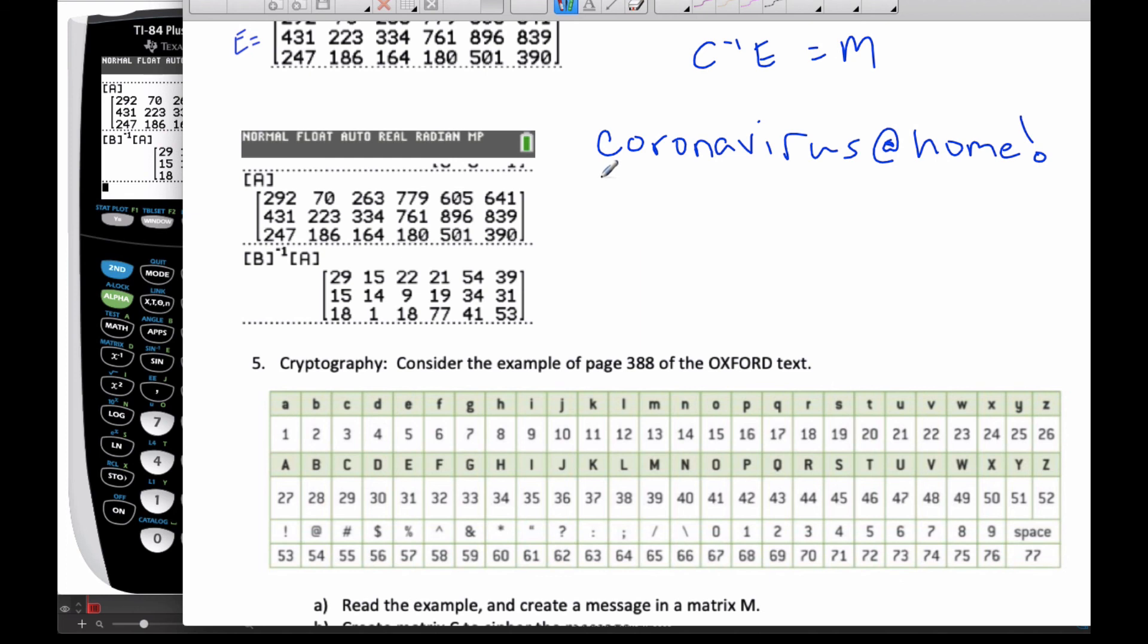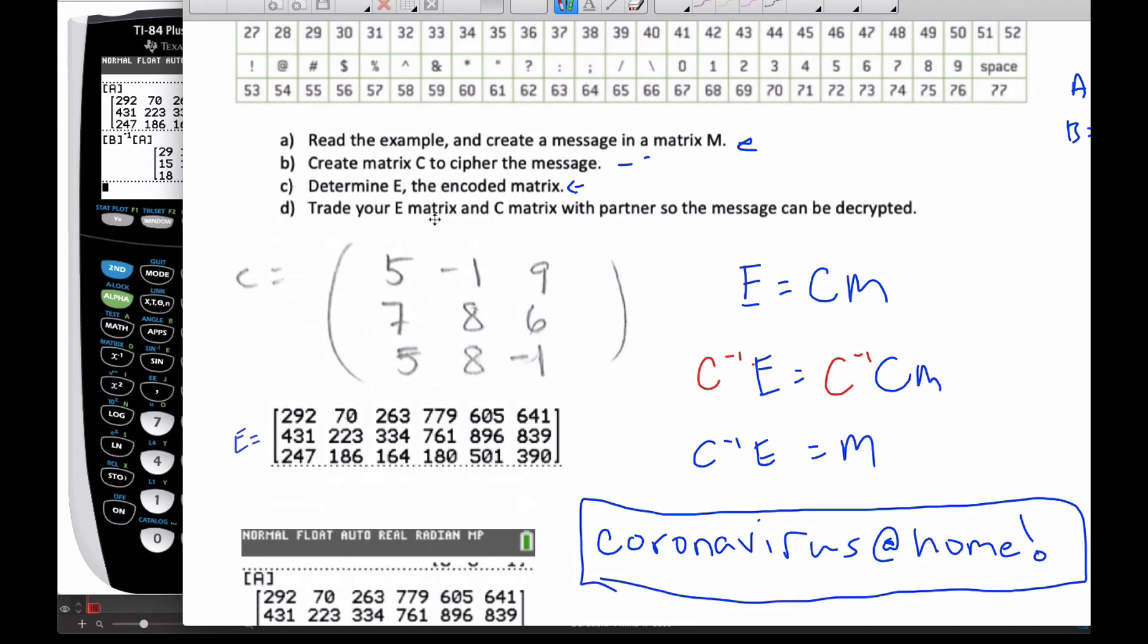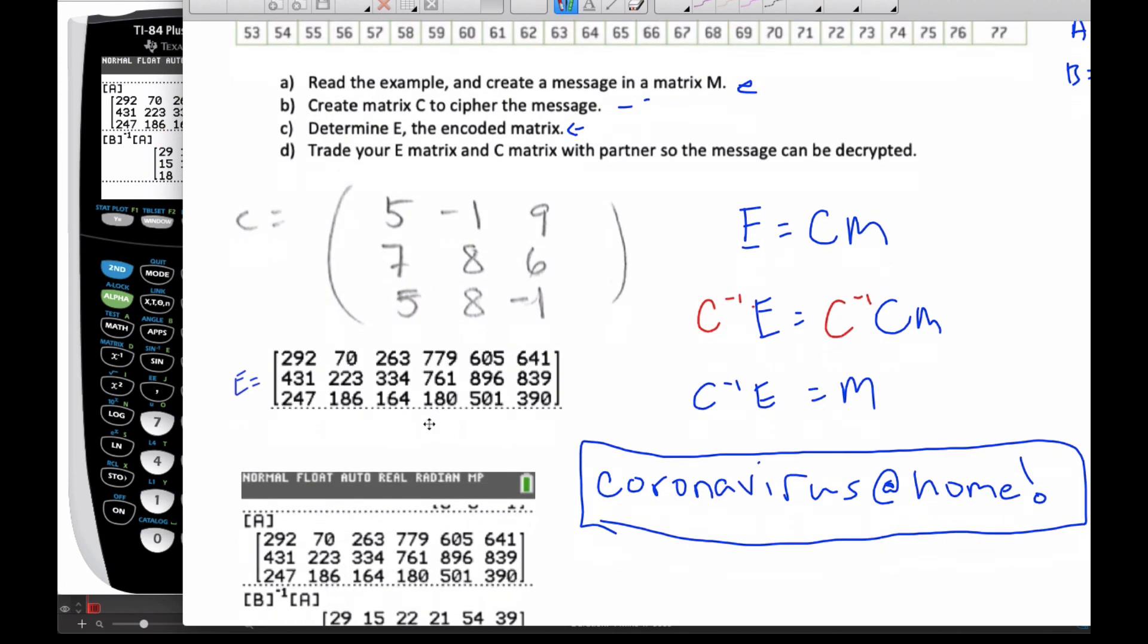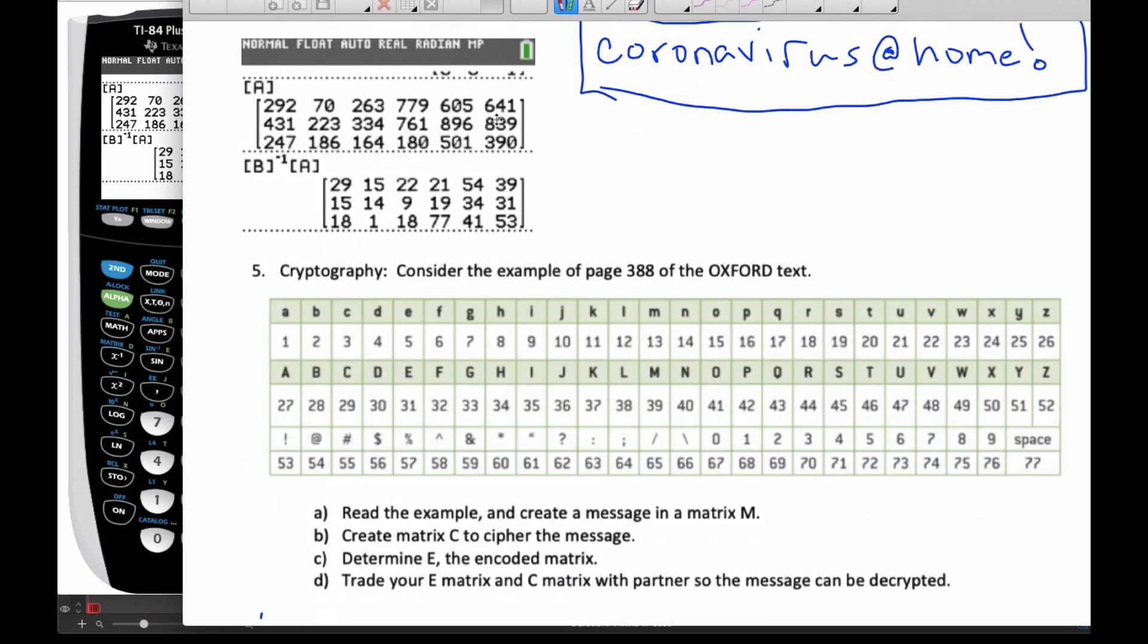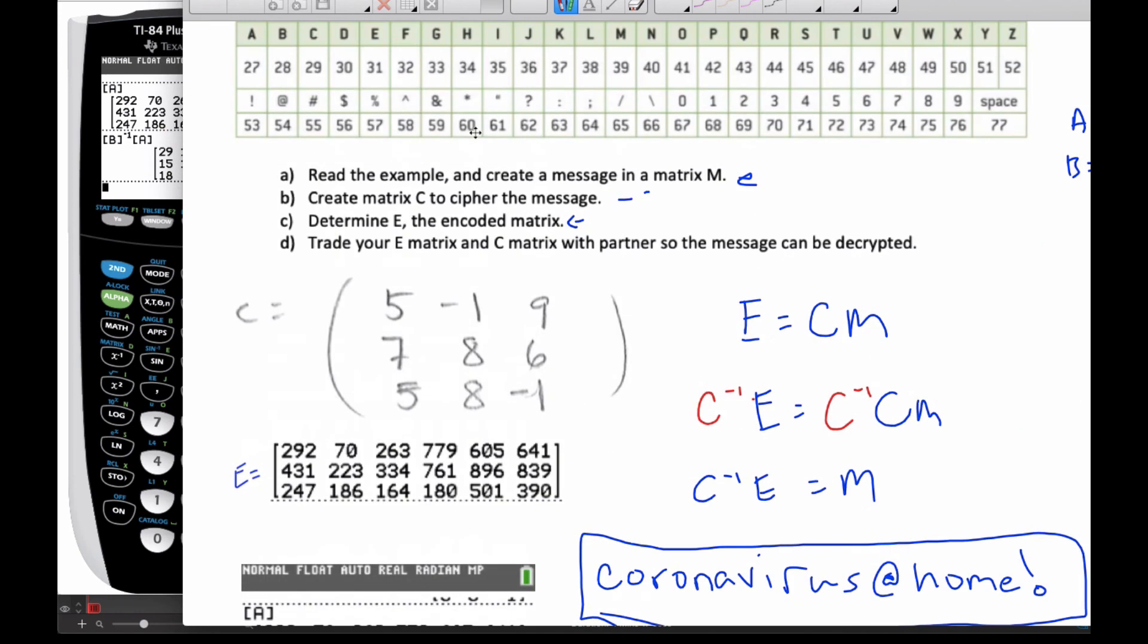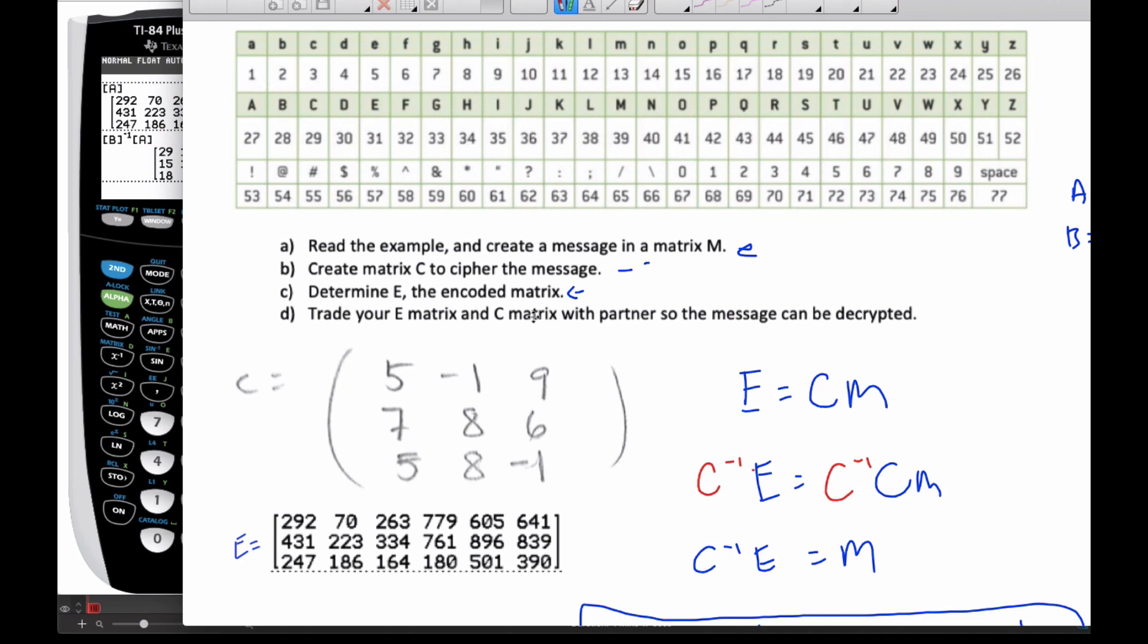So if you decode it, you should end up with coronavirus at home exclamation point was my message to you, fitting for the world we're living in today as I'm making this. All right, so that's a little bit of cryptography and the idea behind it. Trade your matrix with a partner and give it a try.